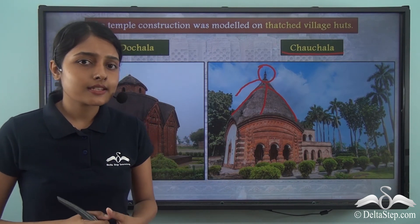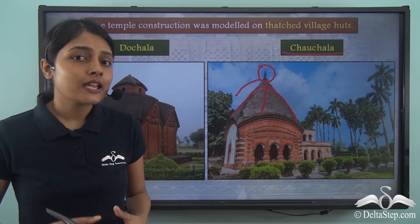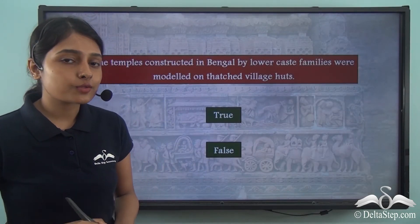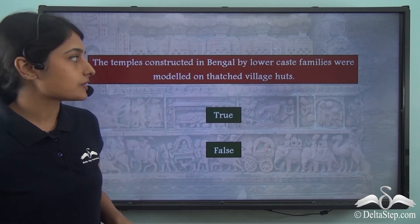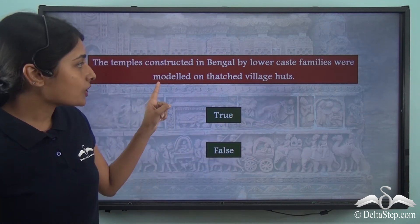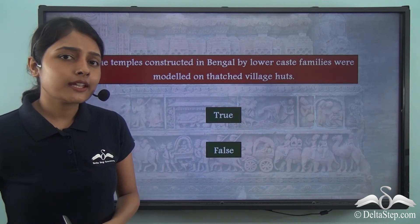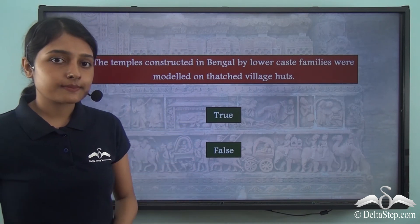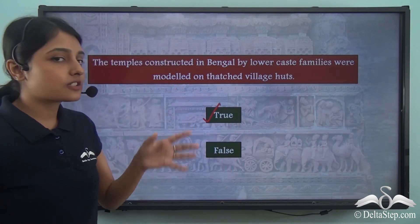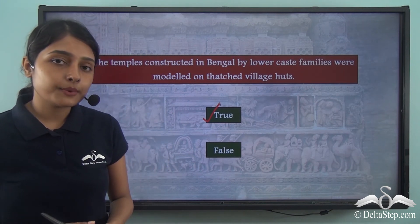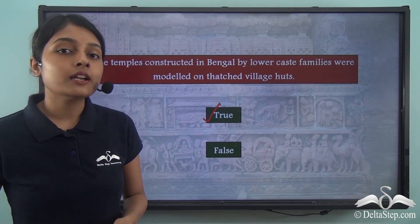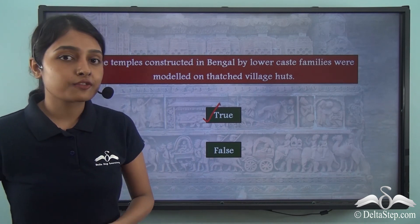Now the question that arises is that where do we find these temples in great number in Bengal? But before finding out answers to that question, let me ask you: the temples constructed in Bengal by lower caste families were modelled on thatched village huts — do you think this statement is true or false? Well the correct answer is true. This statement is true because the lower caste family members wanted to preserve their heritage and tradition, which is why they modelled these new temples on the ancient and former thatched village huts.